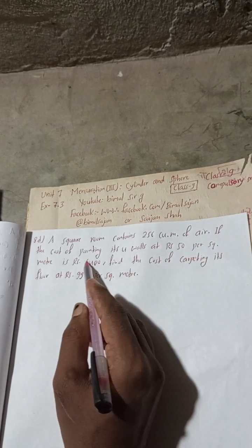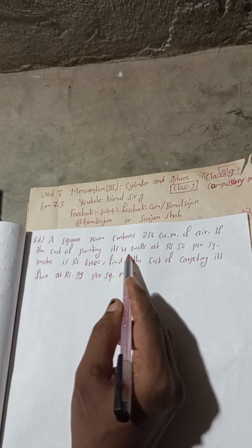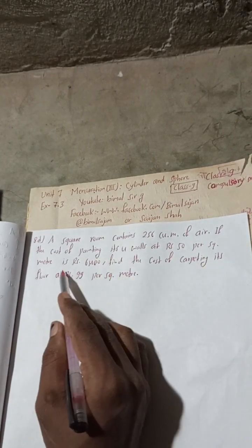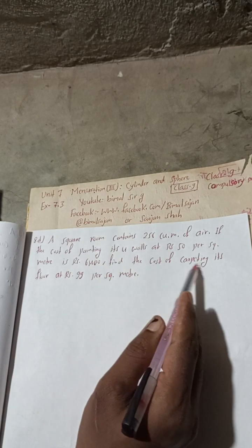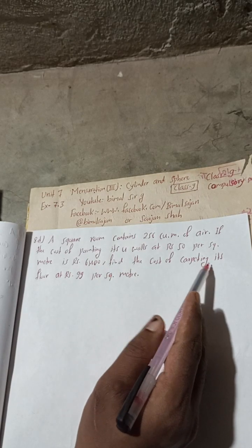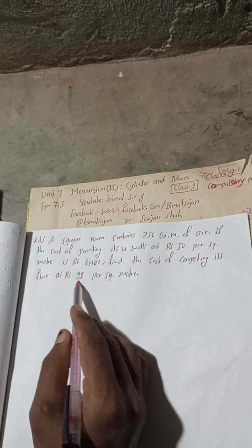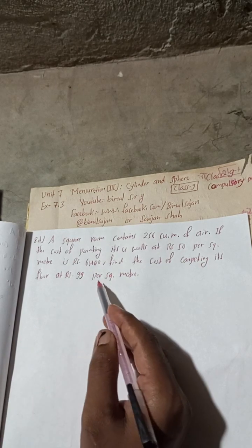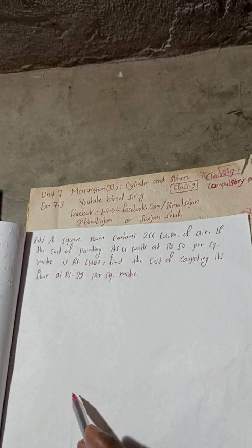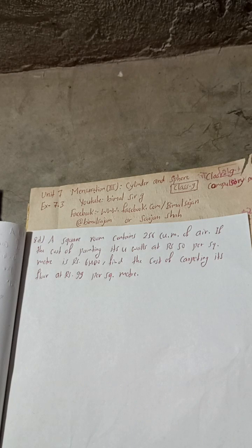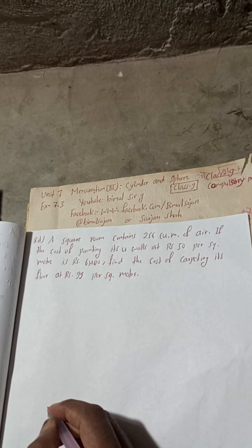Question 8D: A square room contains 256 cubic meters of air. If the cost of painting 4 walls at Rs 50 per square meter is Rs 6400, find the cost of carpeting its floor at Rs 99 per square meter.